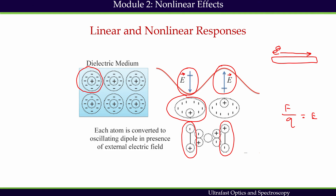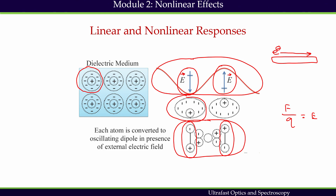An oscillating dipole is a source of electromagnetic radiation, so the medium's induced polarization creates another emitted field. As the input electric field oscillates over time, the induced dipole also oscillates, and any oscillatory dipole is the source of another electromagnetic field, called E_emitted. The two-step process is: first, the light electric field converts each atom into an oscillating dipole; second, the dipole oscillation emits an additional electric field at the same frequency.